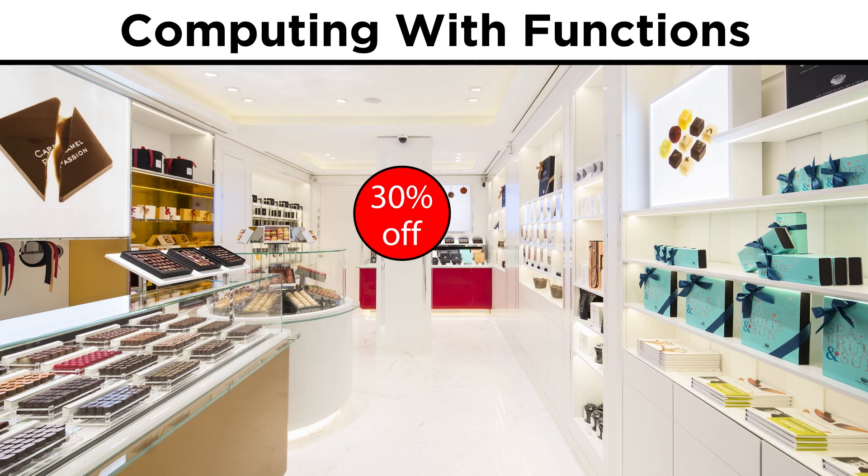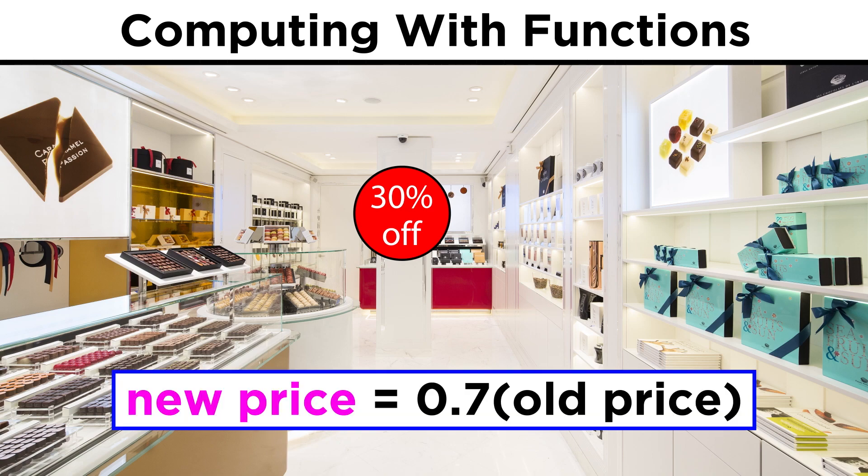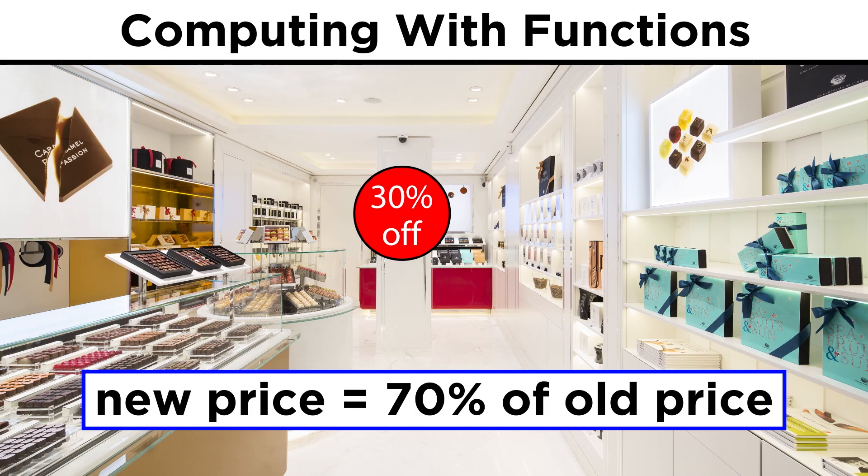Let's say at a particular store, everything is thirty percent off today. That means to find the new price of an item, we would multiply the original cost by zero point seven, because that will give us seventy percent of the original price, which is the same thing as thirty percent off.